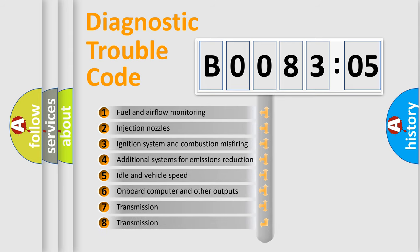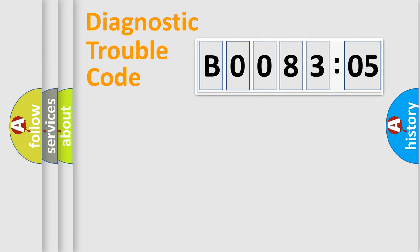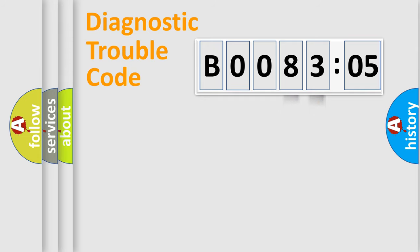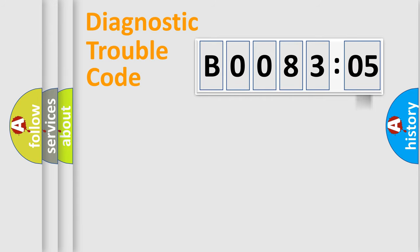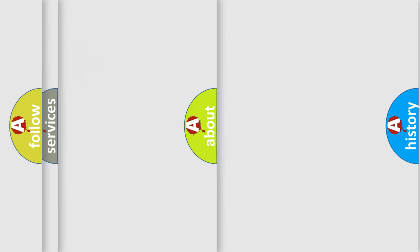The third character specifies a subset of errors. This distribution is valid only for the standardized DTC code. Only the last two characters define the specific fault of the group. The add-on to the error code serves to specify the status in more detail, for example, a short to ground. Note that such a division is valid only if the second character code is expressed by the number zero.